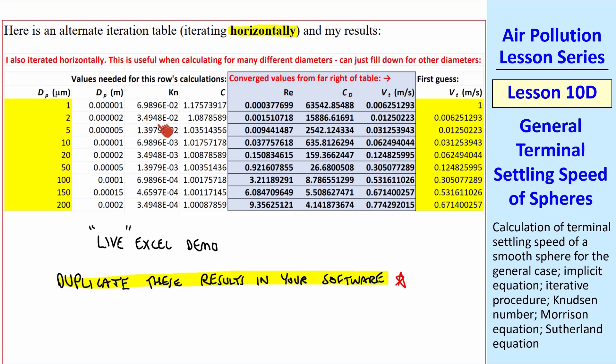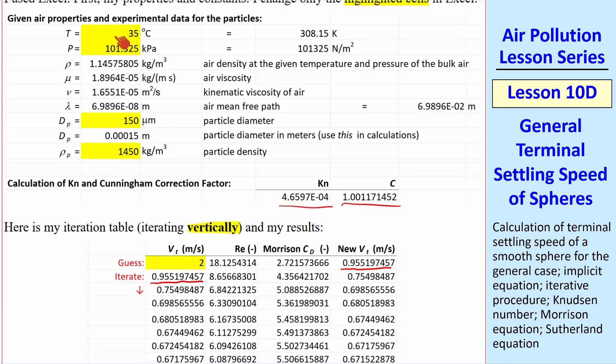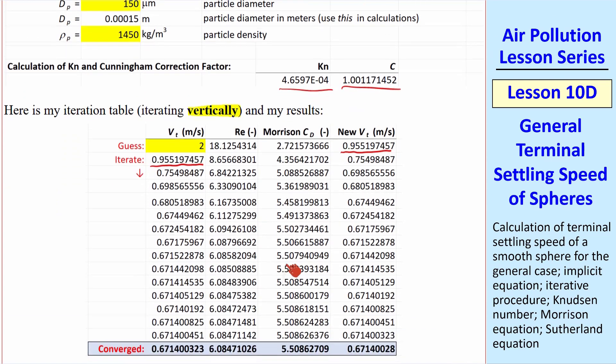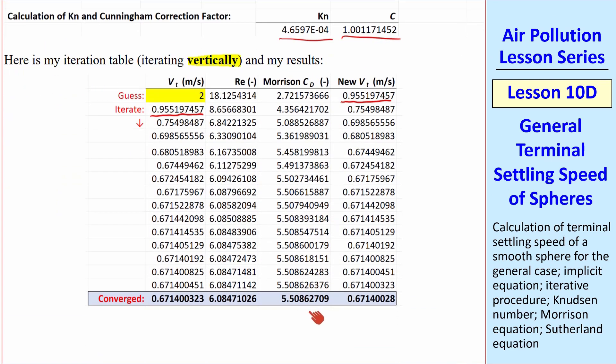Then you can trust that you're doing your software correctly. And once you have this set up in your software, you should be able to change temperature, pressure, particle diameter, and particle density.